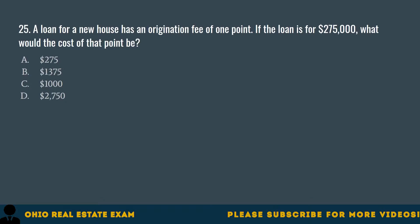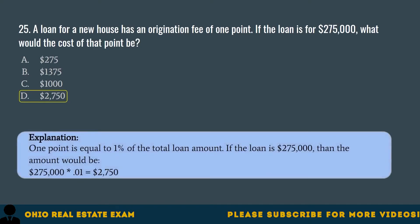Question 25. A loan for a new house has an origination fee of one point. If the loan is for $275,000, what would the cost at that point be? A. $275. B. $1,375. C. $1,000. D. $2,750. The correct answer is D. $2,750. One point is equal to 1% of the total loan amount. If the loan is $275,000, then the amount would be $275,000 × 0.01 = $2,750.